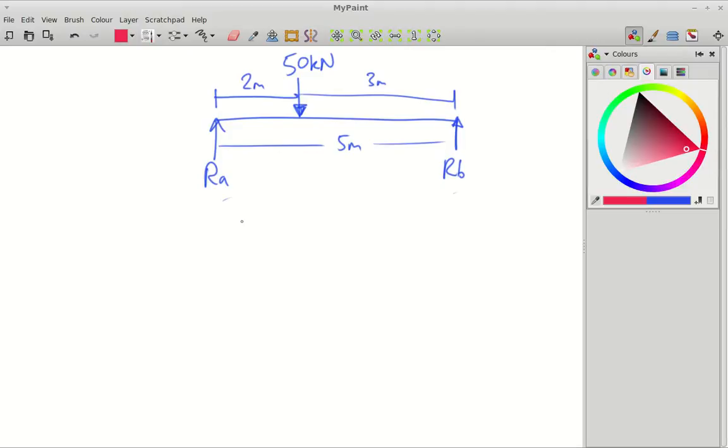We'll work out RA first. So to work out RA, take moments at RB. What we're going to do is, just bear with this a second, clockwise moments equals anti-clockwise moments. Now, when we take moments at RB, it means we're going to put a pivot point here. And we're going to assess, is this force turning it clockwise or anti-clockwise, and is this force turning it clockwise or anti-clockwise. And from that balancing act, we'll be able to work out what RA is.